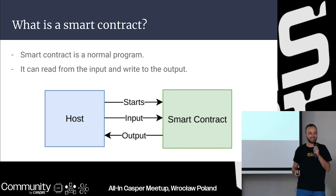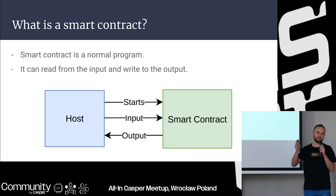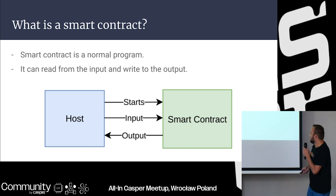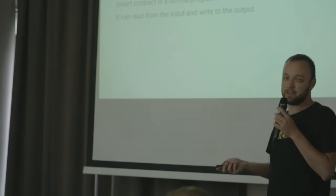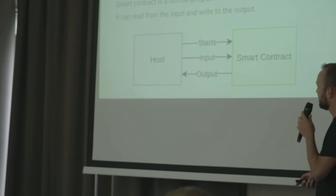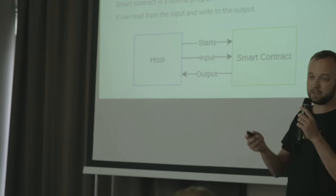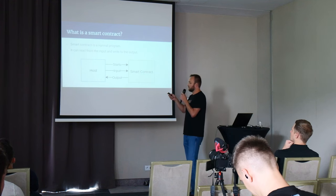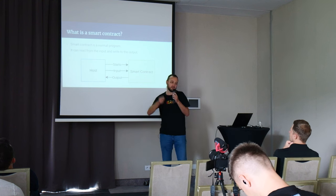A lot of people say smart contract development is magic programming, but it's not — it's super simple code. If you're a Rust developer, there's no such thing as not knowing how to code smart contracts. You just need to read a bit of documentation. What it does is read from the input and write to the output like a normal program. Smart contracts are executed against a host, which could be a virtual machine, your computer, or your browser.